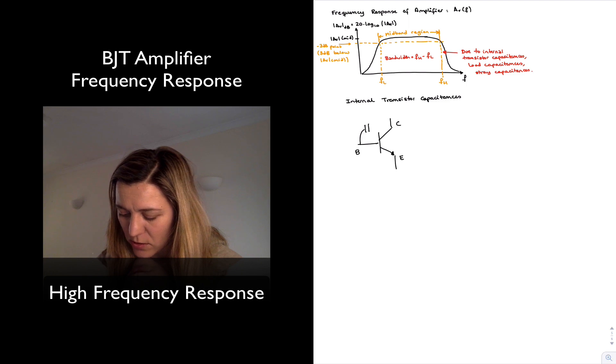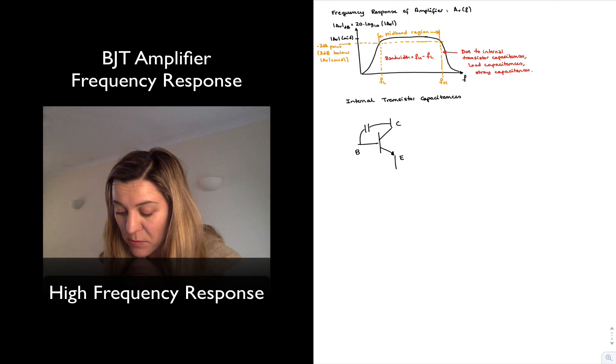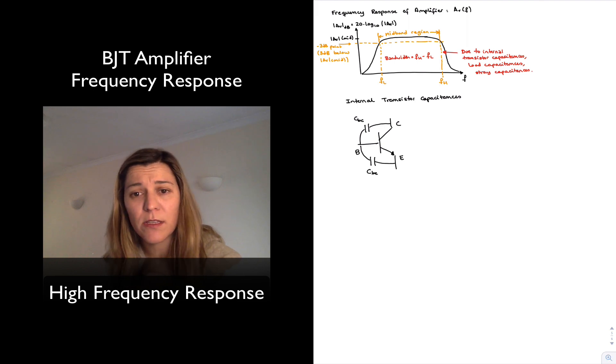There is one capacitance from base to collector, which I'm going to label CBC. And there is one from base to emitter, which I'm going to label as CBE. And these are the two most important ones that are going to be playing a role in determining that high frequency response.